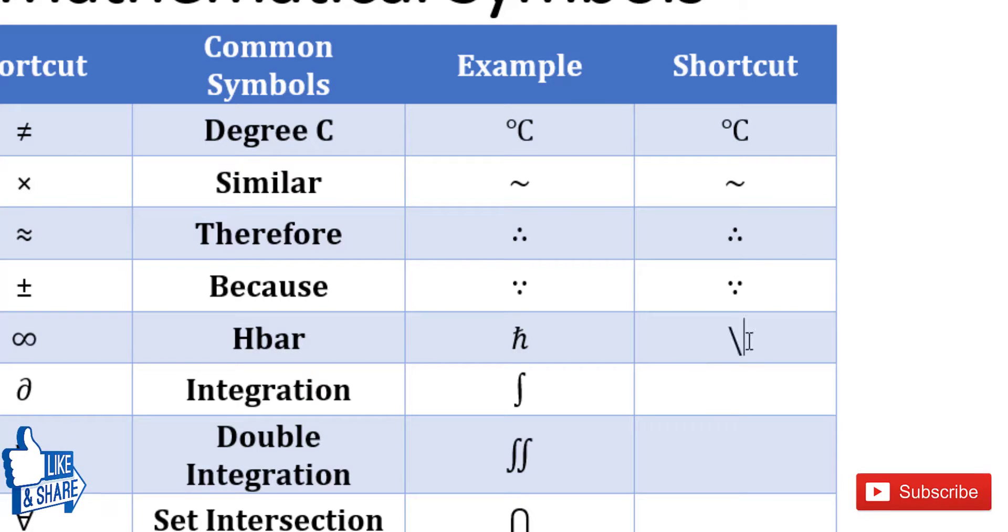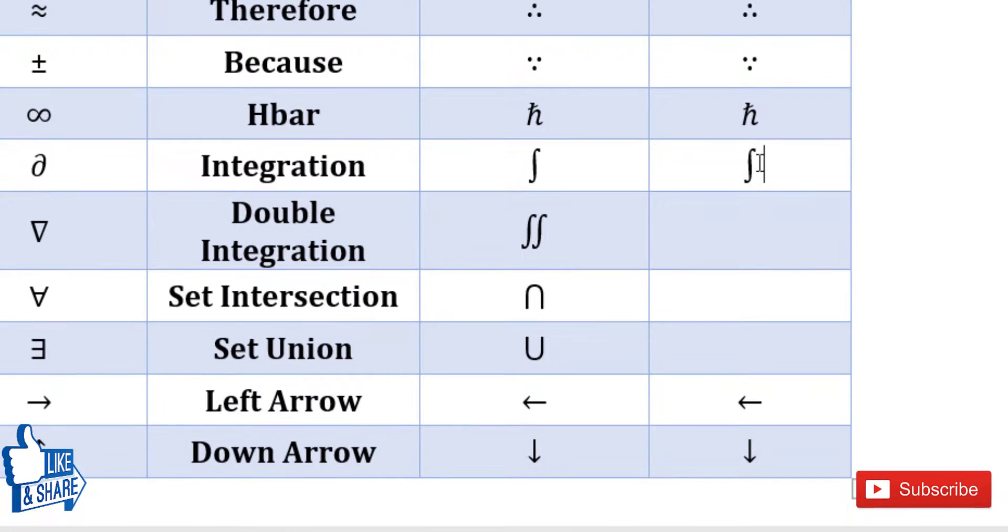And for hbar, it is simply hbar. Now, if you just want to have an integration sign without limits, then you can just type int. Or if you want to have integration with upper limit, lower limit, and other things, it is better to go to the equation editor and use a shortcut. I have made a separate video on that. So if you want to know how to type integration and other mathematical equations in Microsoft Word with help of this and other shortcuts, then make sure that you watch that video.